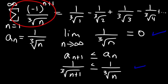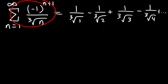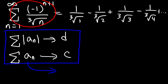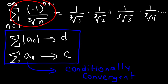Therefore, the original series converges by the alternating series test. To summarize: we analyzed the absolute value of the series and found it to be divergent; then we checked the original series using the alternating series test and found it to be convergent. So the original series is conditionally convergent.